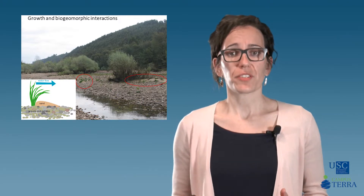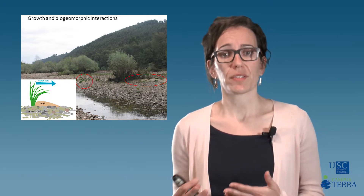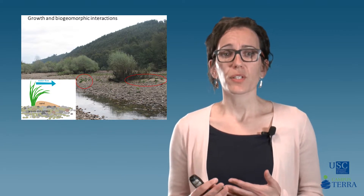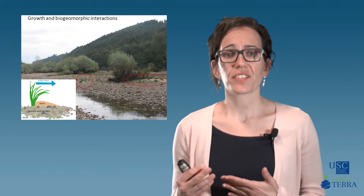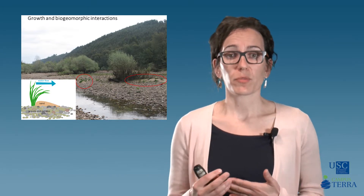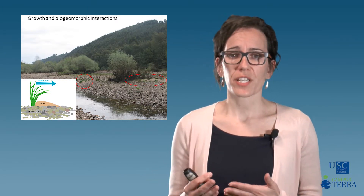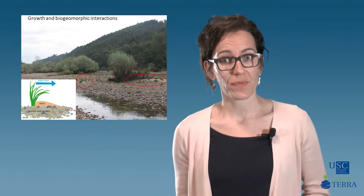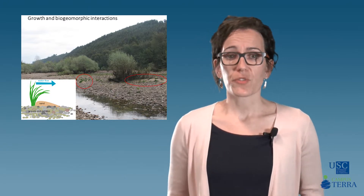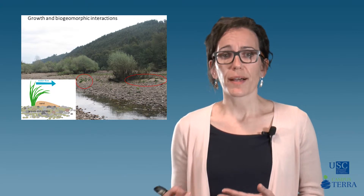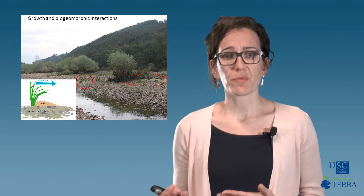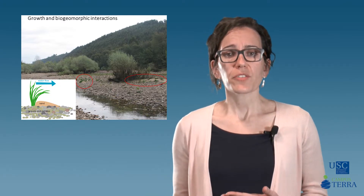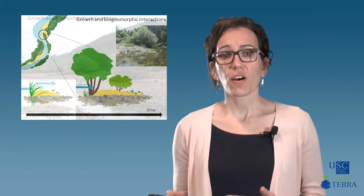One of the most remarkable features of riparian species is their role as ecosystem engineers modulating the physical habitat. For example, riparian plants modify flow fields to induce fine sediment deposition around plant patches, at scales ranging from a few square centimetres to entire point bars. The picture illustrates this case on a gravel bar of a tributary of the Tagus River in central Portugal.